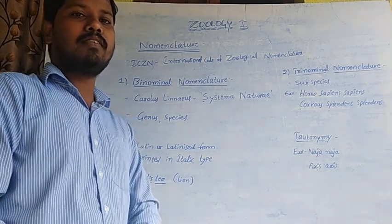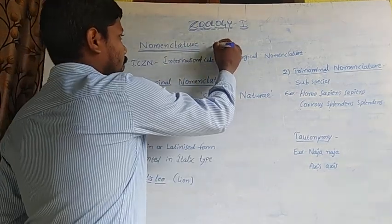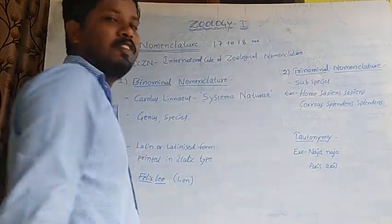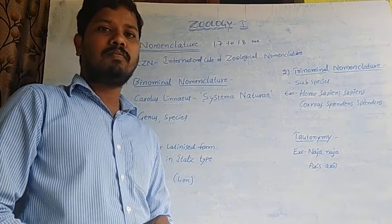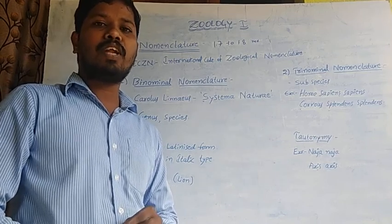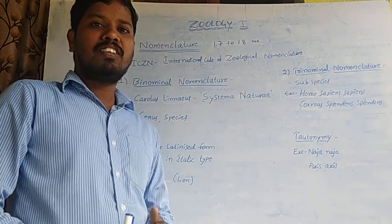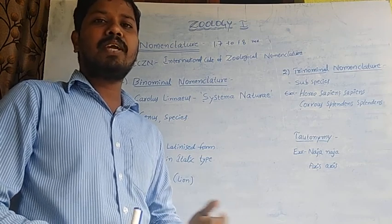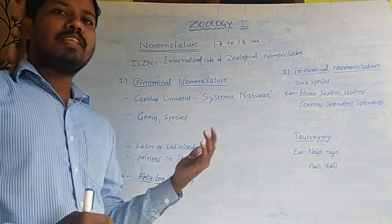Dear students, let us discuss about nomenclature. There are 1.7 to 1.8 million species described all over the world. They are called by their local names based on regional languages, so it was needed to standardize the naming so that animals are known by the same name all over the world.